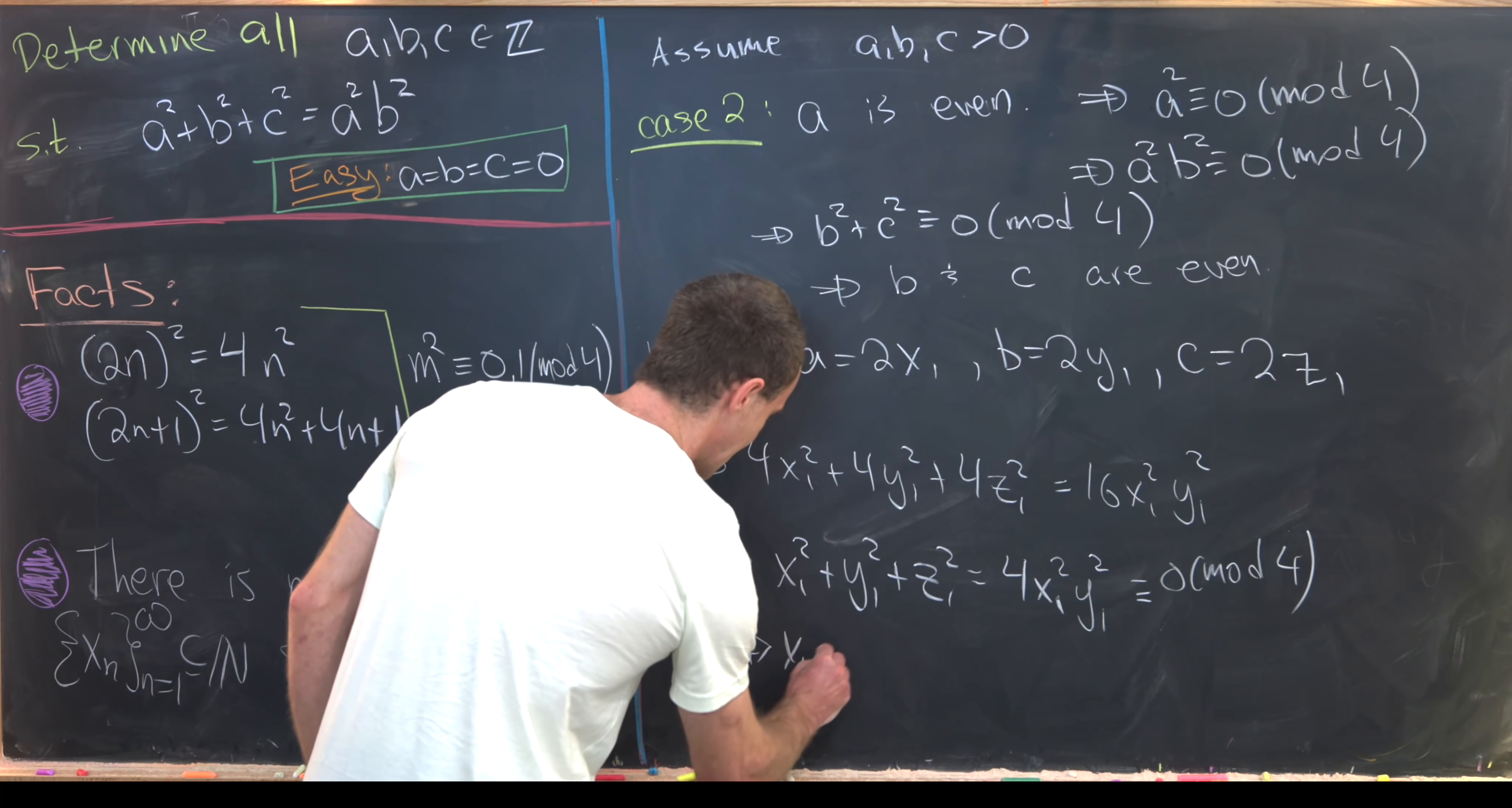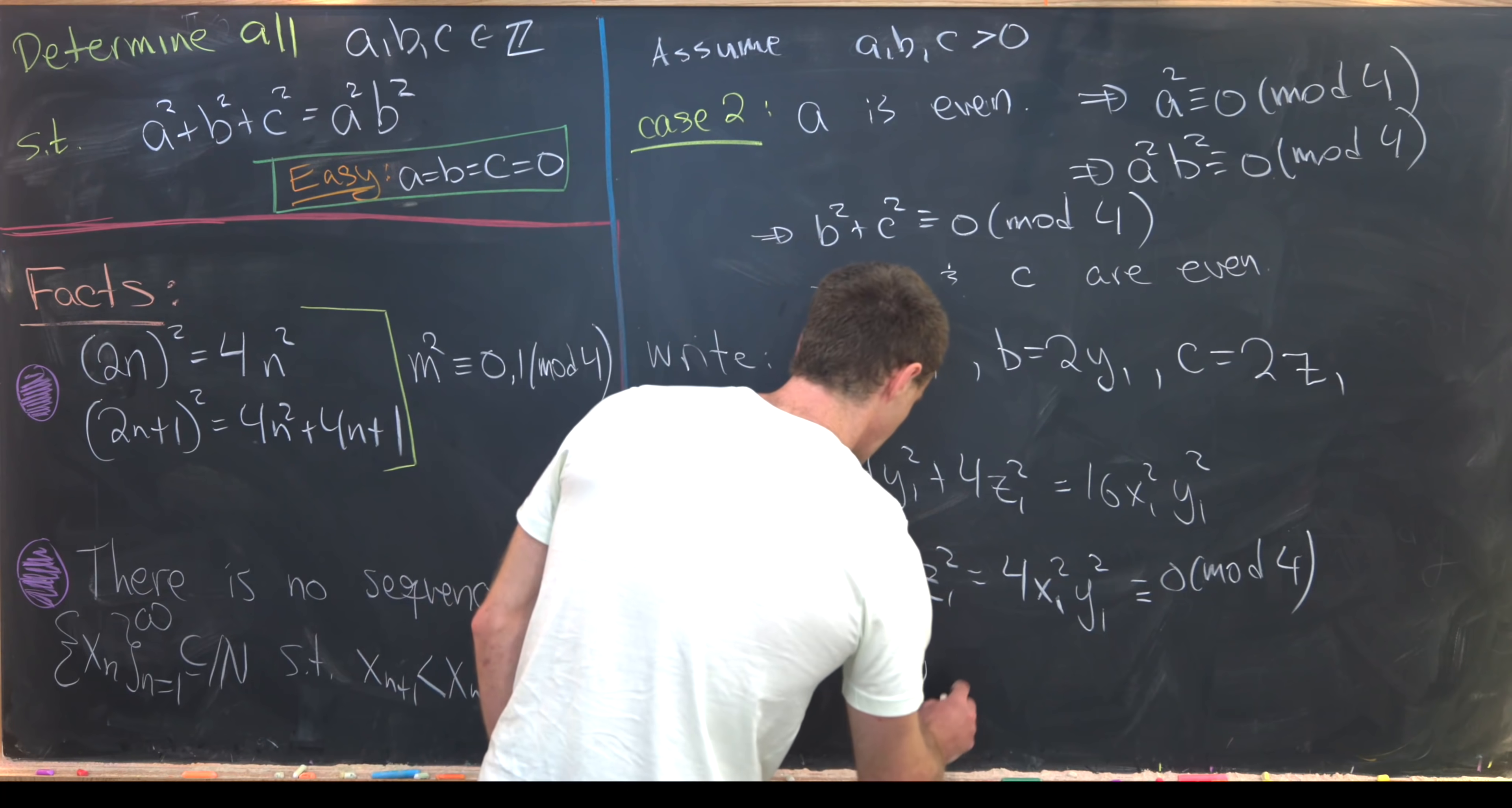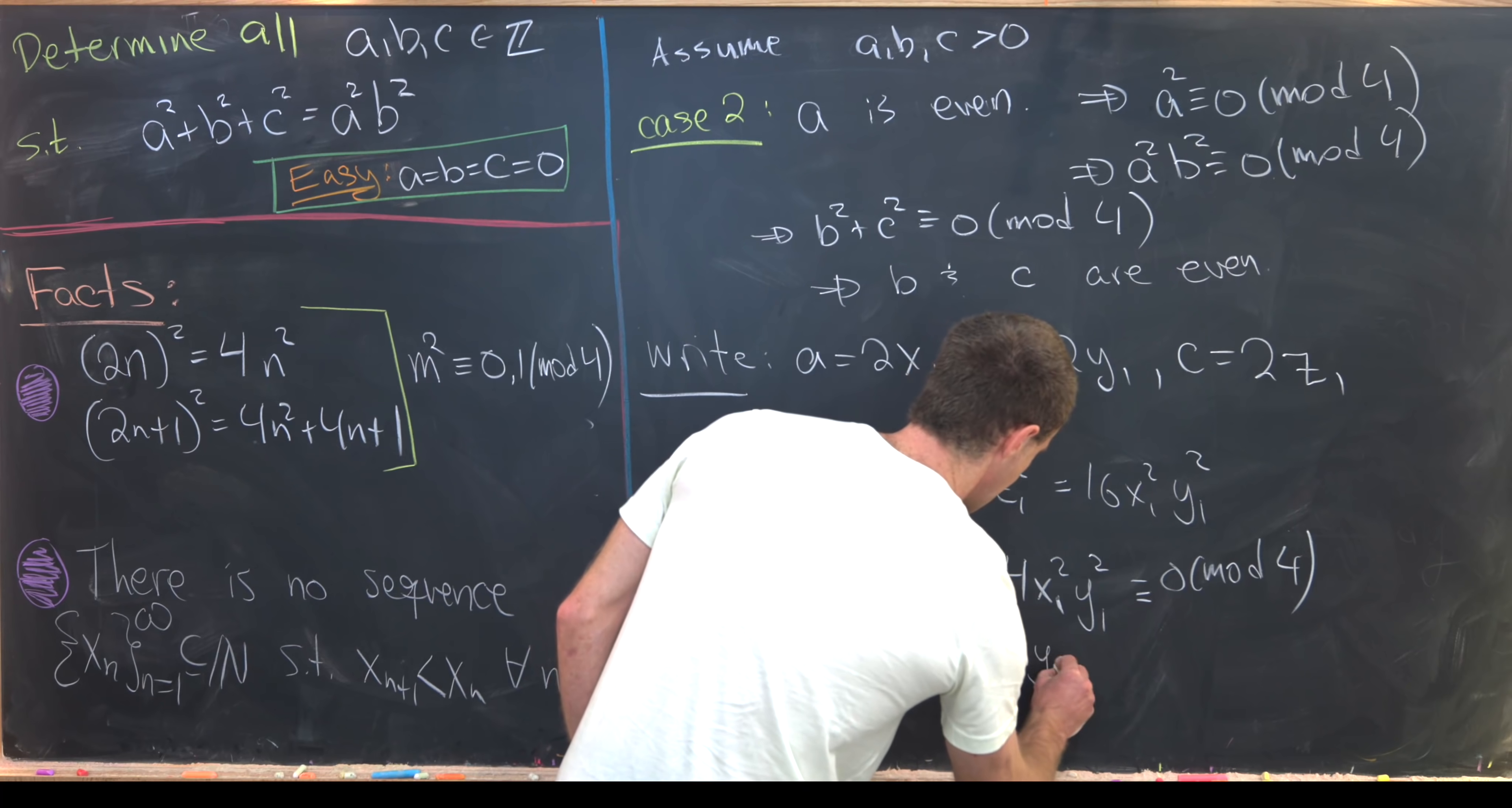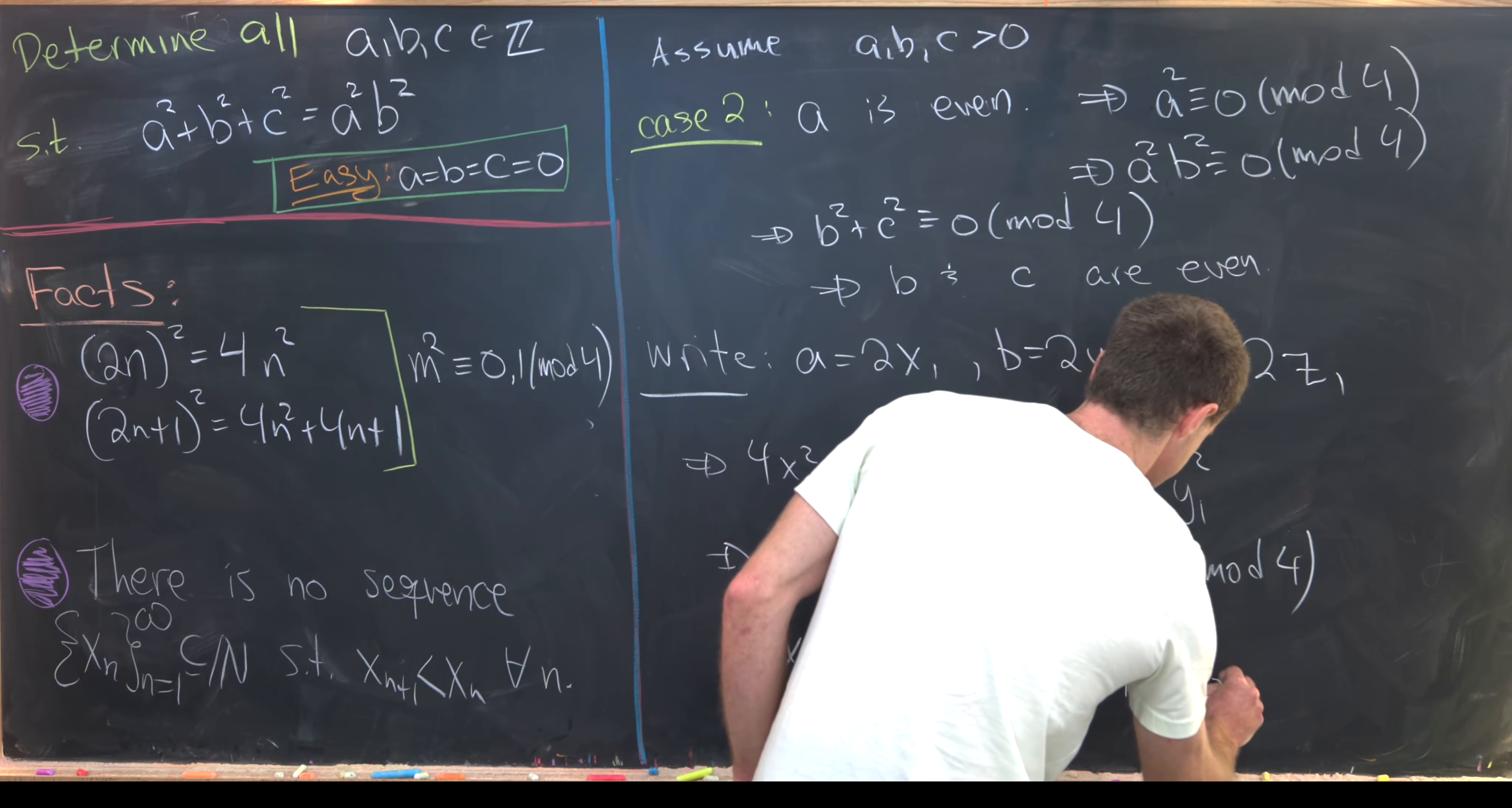So that means we can write x₁ = 2x₂, we can write y₁ = 2y₂, and we can write z₁ = 2z₂.